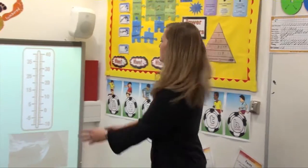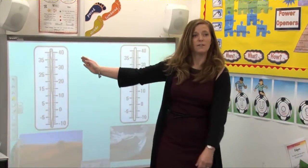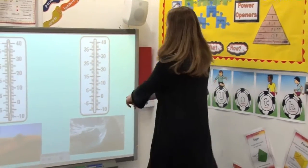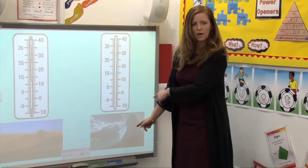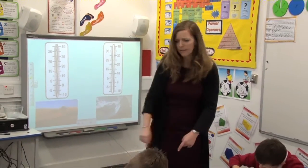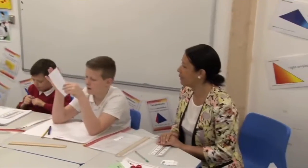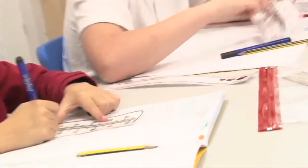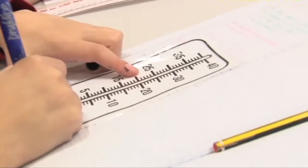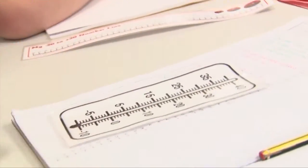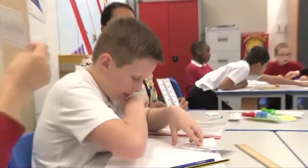Well done — what you've shown me by doing that is that you understand in the desert, in a hot place, the temperature is going to be high. Now what about in Antarctica? Rub out with your finger the bits that you don't need. Now on your thermometer, what temperature might it be in Antarctica? I'll rub that off for you quickly and then you decide where it's going to go.